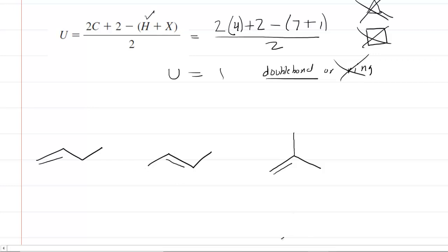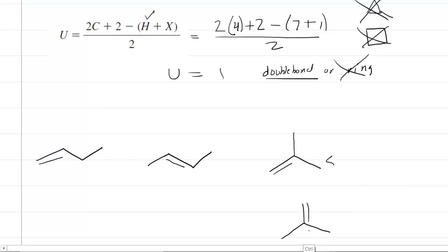There are some redundant structures here. Some might think about putting the double bond in other positions, but those would be the same as structures already drawn. Just be careful about representing redundant structures as you try to solve the question.